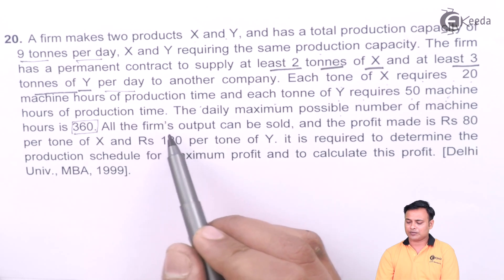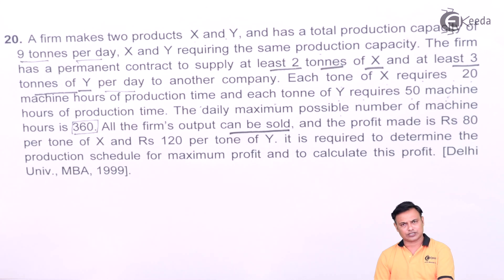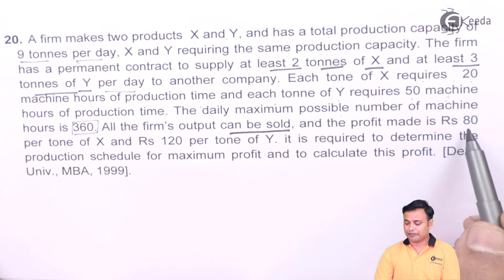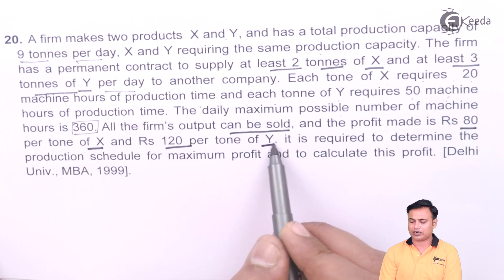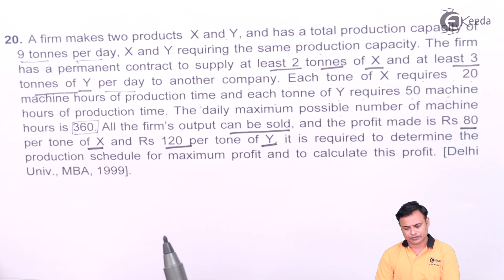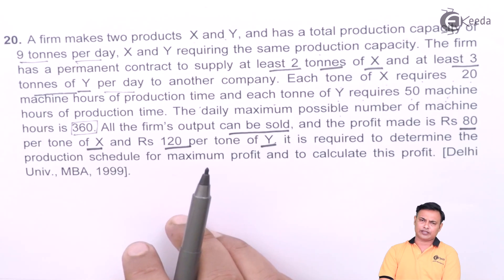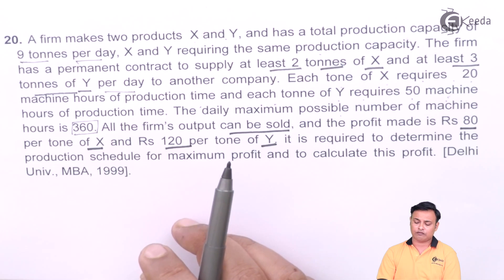All the firm's output can be sold. So there is no demand constraint as such. We can sell whatever we are manufacturing. And the profit made is 80 per ton for X and 120 per ton for Y. It is required to determine the production schedule for maximum profit. So we need to formulate this and decide how much should I produce for which product.